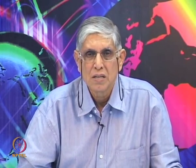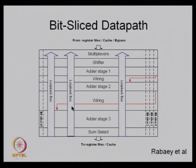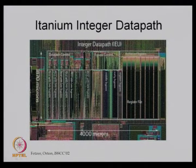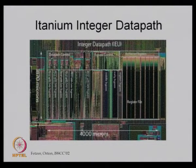Most of these slides are taken from Rabaey's book. The bit-slice data path shown here includes multiplexers, shifters, adder stages 1 and 2, and wirings connecting them. This shows how data flows from input to output — that is why it is called a data path. A typical Itanium integer data path is roughly 4000 microns and includes integer data path, digital control, data path control, bypass control, and register files. Any processor part requires a lot of data processing, which is essentially arithmetic.